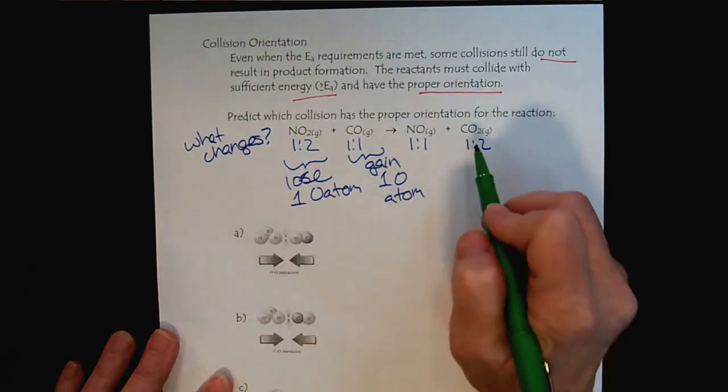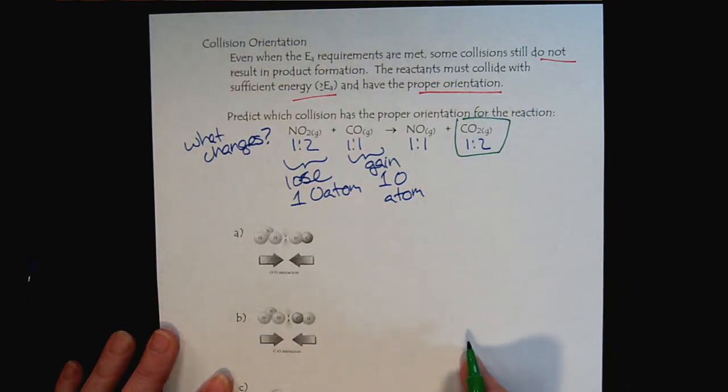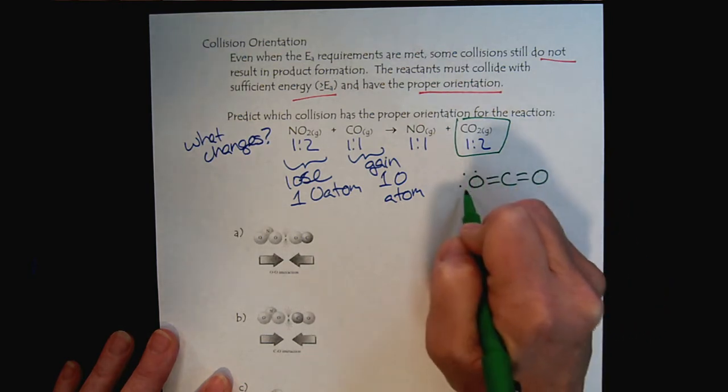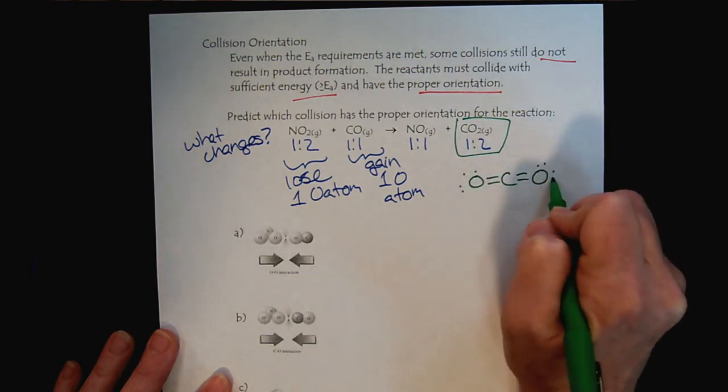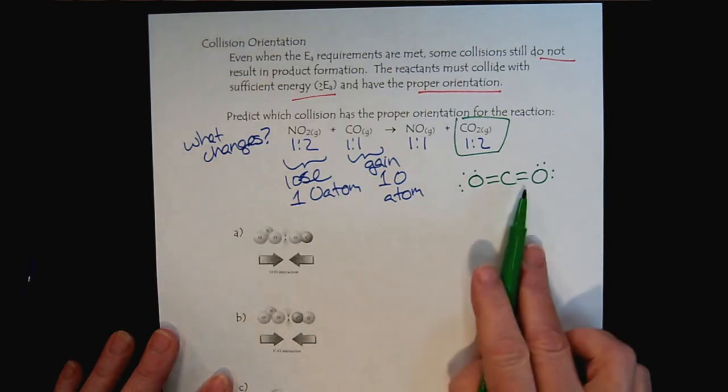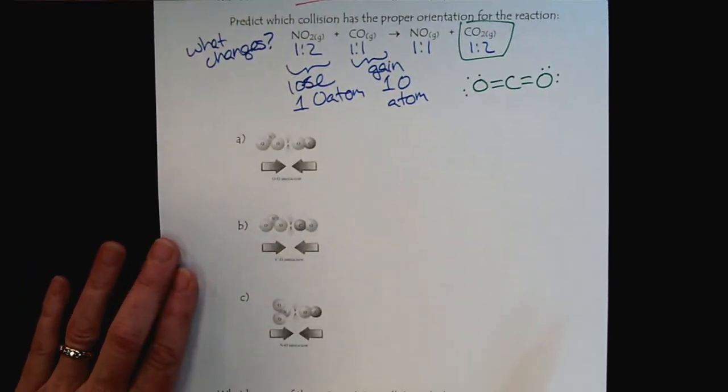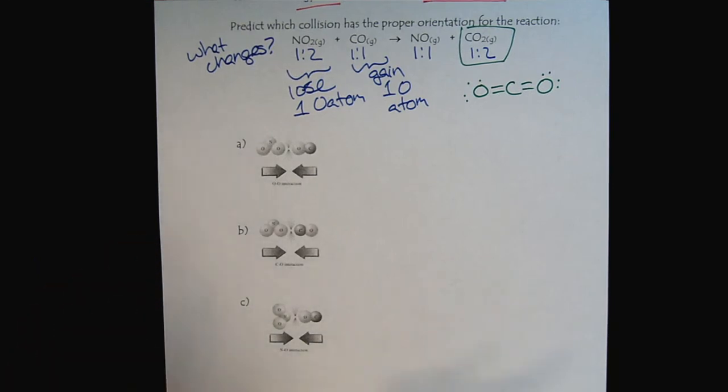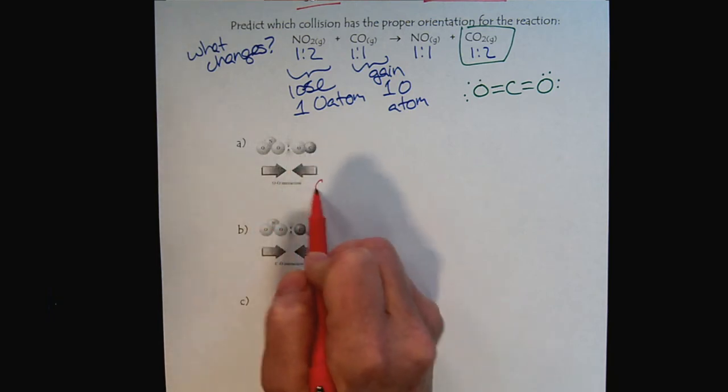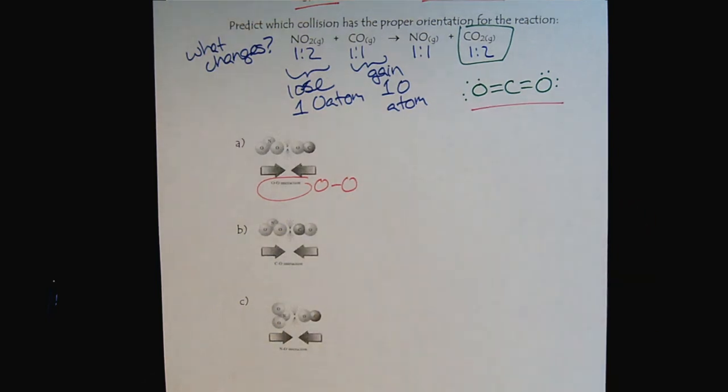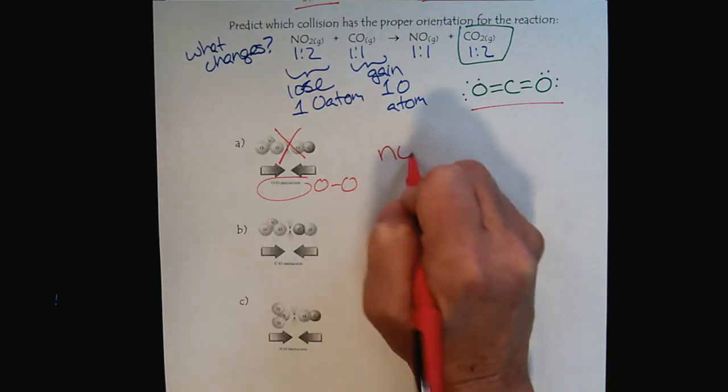So now let's think about the structure of our product. We've spent a lot of time working with carbon dioxide, so we know that the carbon atom is sandwiched between the two oxygen atoms. Now let's look at these three possible scenarios to see which one would support the correct orientation. Notice here that we have O to O interaction, and that's not going to create our desired product. So this would be an improper orientation, no reaction.